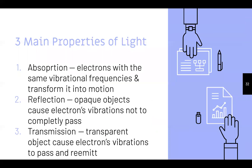The three main properties of light: light can either be absorbed, reflected, or transmitted. Absorption is when electrons with the same vibrational frequencies transform vibrations into motion. Reflection is when opaque objects cause electron vibrations not to pass completely through. Transmission is when transparent objects cause electron vibrations to pass through and re-emit. If you understand those words — absorb, reflect, transmit — contextually, you'll understand them in terms of light as well.